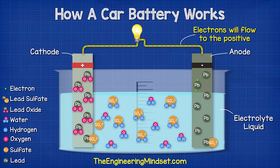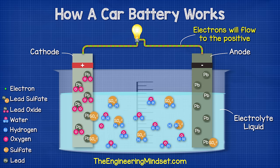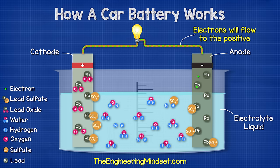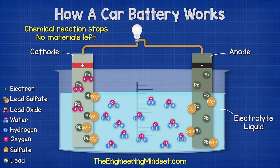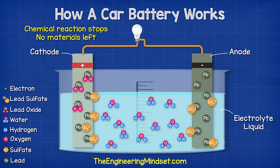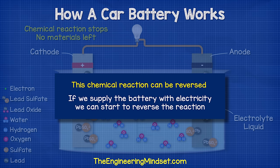While the path exists the chemical reaction continues, but this won't last forever. The chemicals required for the reaction will run out, the acid becomes diluted and weaker, and a buildup of lead sulfate coats both of the electrodes. This means the materials of the electrodes are becoming more similar, so the chemical reaction becomes harder to achieve.